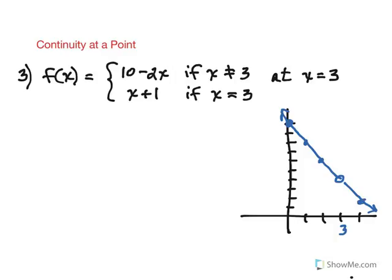The second piece, though, states that when x equals 3, your y value is given by x plus 1. And notice that then fills in the hole. So really all you have in the end is a line.